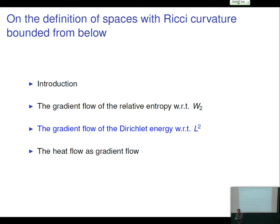Such a gradient flow, after Jordan-Kinderlehrer-Otto, is the heat flow when our space is smooth. The idea now is to link this gradient flow to the gradient flow of the Dirichlet energy in a metric measure space, so that linearity of the gradient flow of the Dirichlet energy will be linked to the Hilbert property of W^{1,2}. Today I will start presenting the other side of the story.